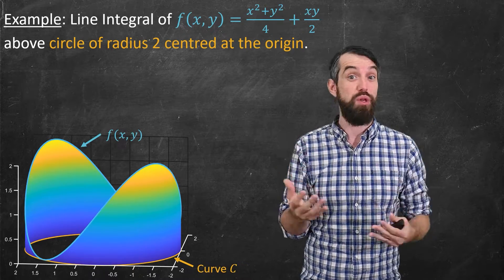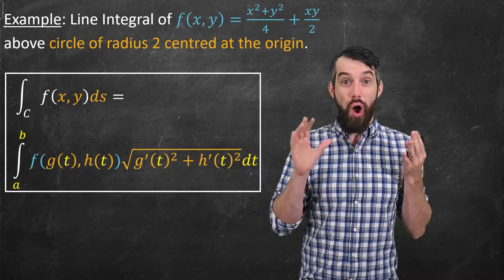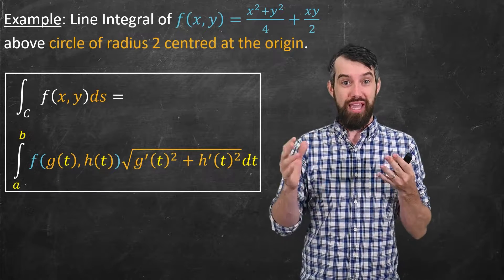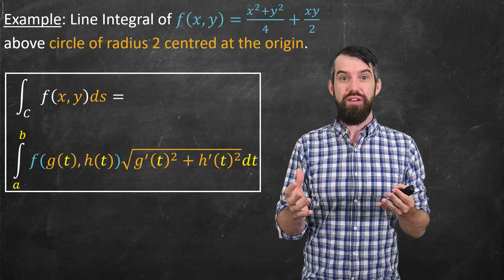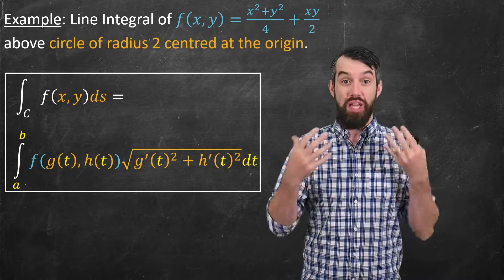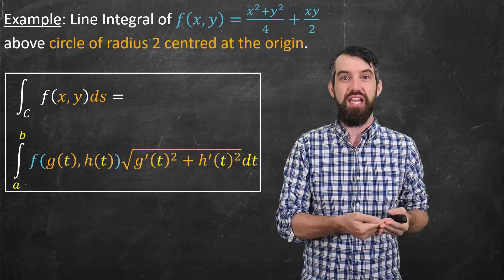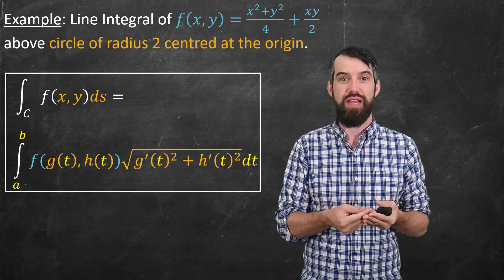Now we're actually just going to compute it with the specific functions that we have. So, our formula for the line integral is this. The left-hand side tells me the thing I'm trying to compute. The line integral over the curve C of my function integrated with respect to arc length, integrated ds.